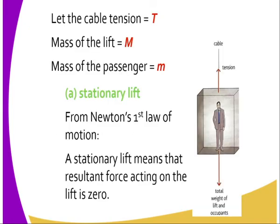For question number one, let the cable tension be T, mass of the lift be M, and mass of the passenger be small m. For the stationary lift, from Newton's first law of motion, a stationary lift means that the resultant force acting on the lift is zero.